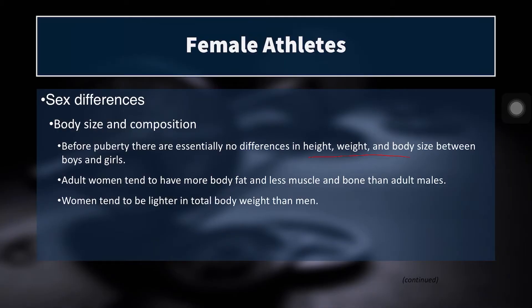Adult women, however, tend to have more body fat and less muscle and bone than their male counterparts, and in general women tend to have a lighter total body weight than men. So: lighter total body weight, smaller upper body frame, particularly less muscle mass in the upper body, and a little bit more fat mass — leading to a different body composition.